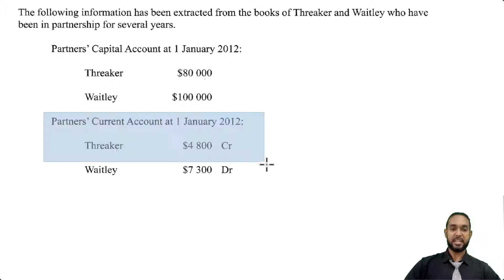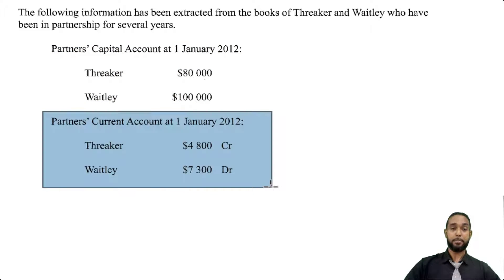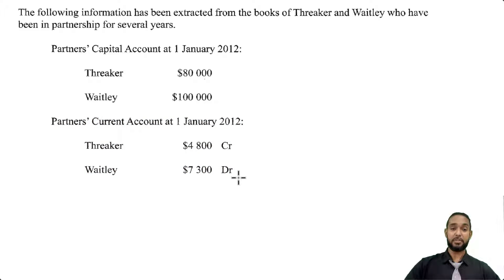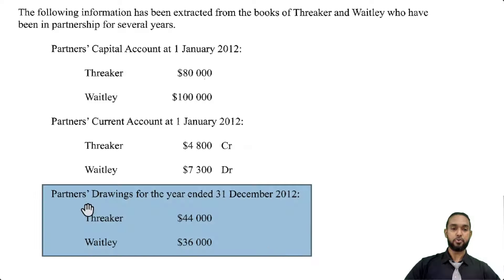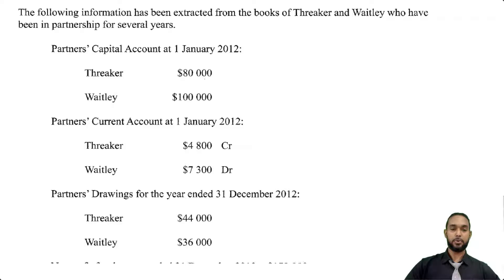The next thing they give us is information about the partners' current account balances at 1st January 2012. Threka had a $4,800 credit balance, whereas Waitly has a $7,300 debit balance. So that's going to come into play a bit later on. The next thing they tell us about are the partners' drawings for the year ended 31st December 2012: Threka $44,000, Waitly $36,000.